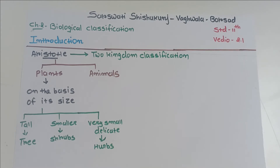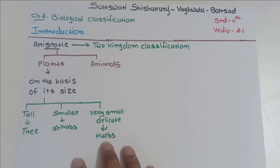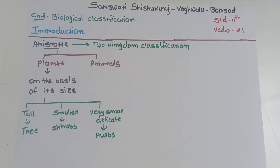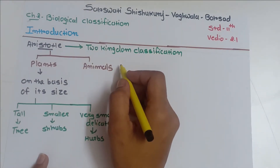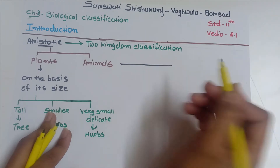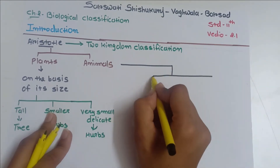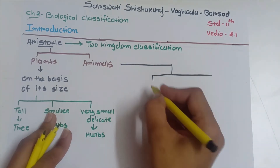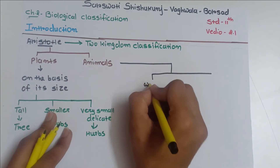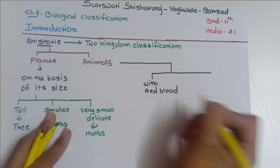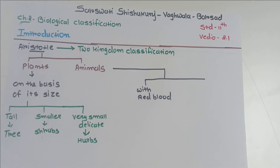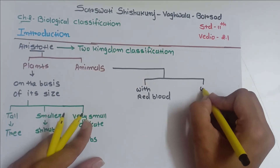So Aristotle first divided into two kingdoms — plants and animals. On the basis of size, Aristotle classified the plant kingdom into very tall plants known as trees, smaller plants known as shrubs, and very small delicate plants known as herbs. Aristotle also classified the animal kingdom into two categories: animals which have red blood, and animals which are without red blood.